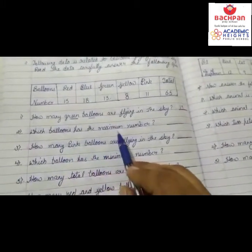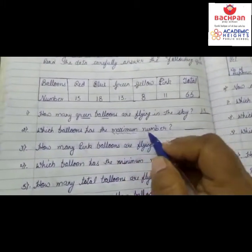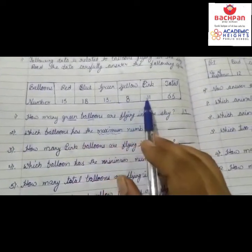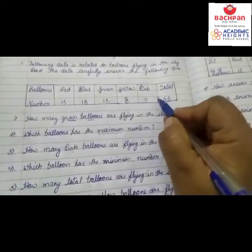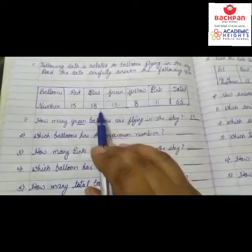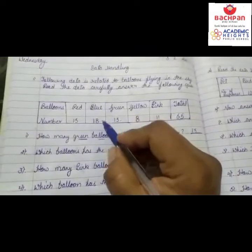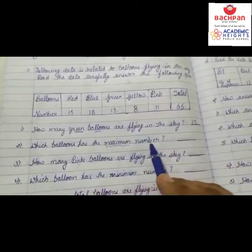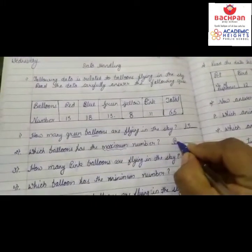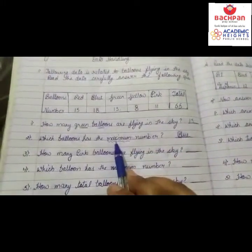Which balloon has the maximum number? Maximum number means the most. Which balloon has the maximum number? Blue. Blue balloons. Right here: blue. Blue balloons سب سے زیادہ ہے، تو maximum number سب سے زیادہ.